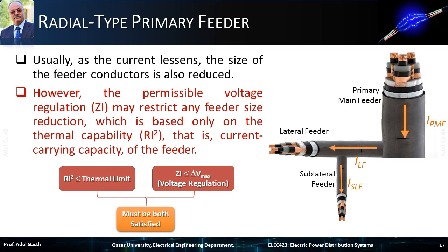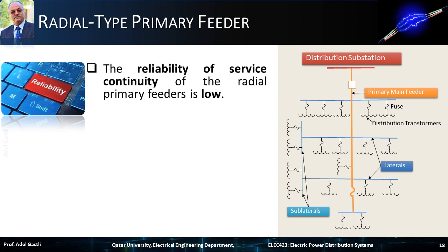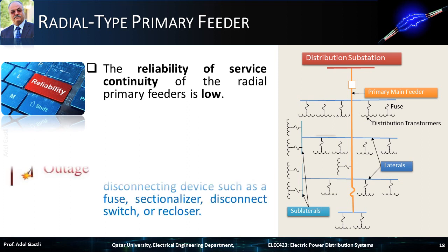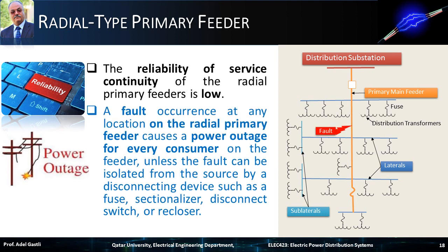As mentioned in the previous chapter, the reliability of service continuity of the radial primary feeders is low. Indeed, a fault occurrence at any location on the radial primary feeder causes a power outage for every consumer on the feeder, unless the fault can be isolated from the source by a disconnecting device such as a fuse, sectionalizer, disconnect switch, or recloser. In this case, a proper coordination of protective devices responses is very essential in order to minimize the number of affected customers.